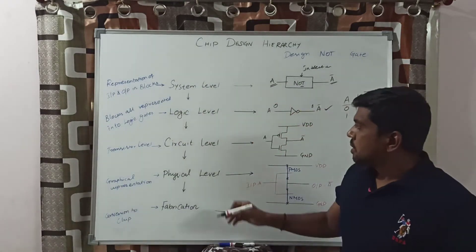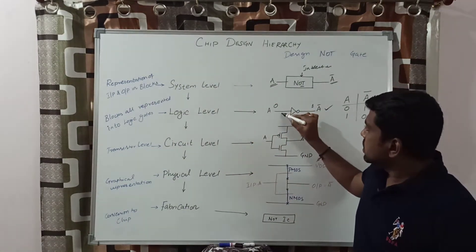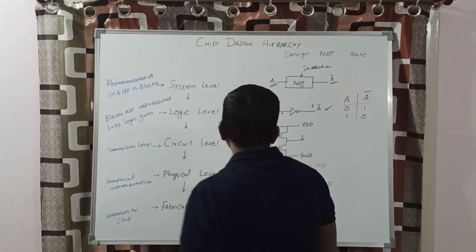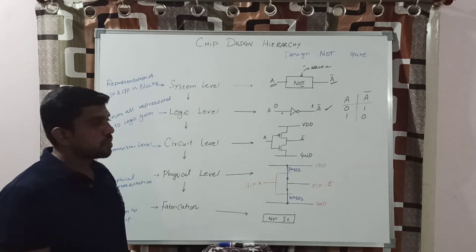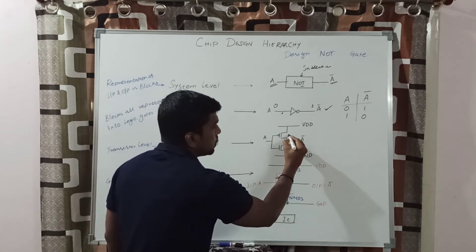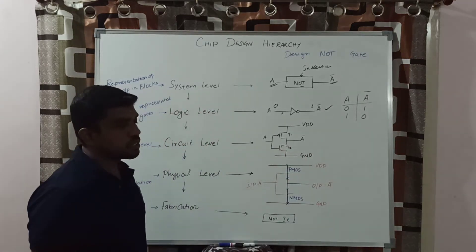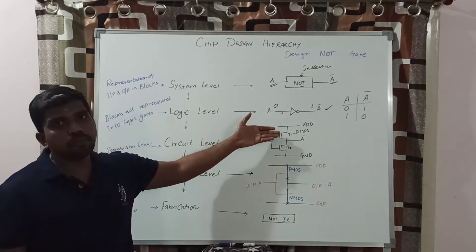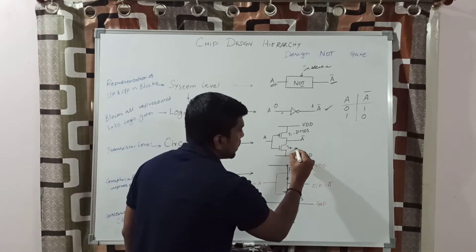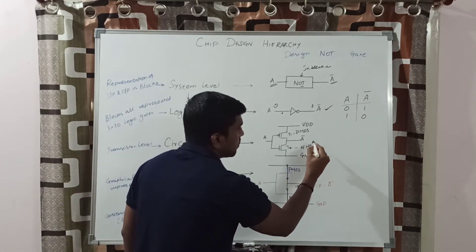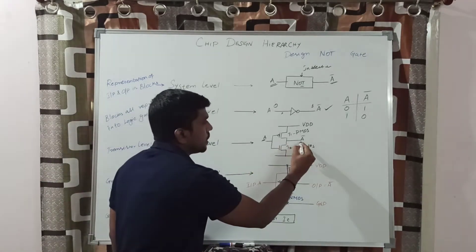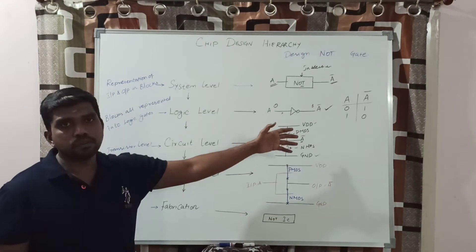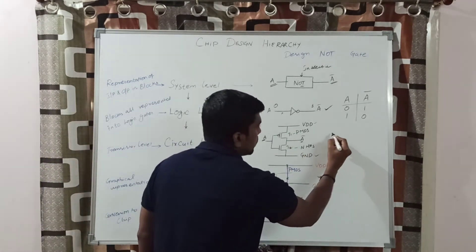The third level is the circuit level. In the circuit level, the logical circuit is transformed into the transistor level. This is a simple diagram of a CMOS inverter. In this CMOS inverter we use two transistors, T1 and T2. T1 is a PMOS transistor. CMOS is a combination of PMOS and NMOS. A is the input, A-bar is the output, and VDD and ground form the power supply unit. You apply the power supply and then apply the input values.